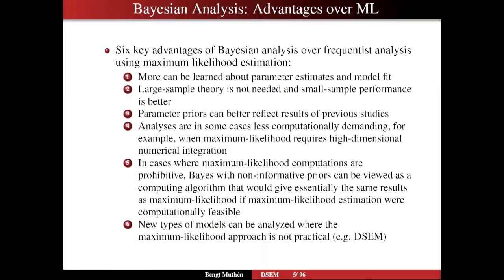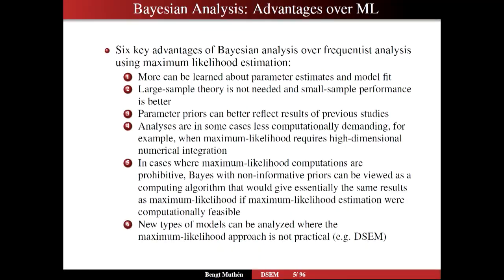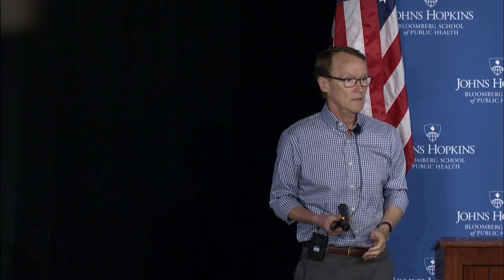ML is an example of so-called frequentist analysis, which is often a polar opposite of what Bayesian analysis is about. I would argue that Bayes can be used to learn much more about parameter estimates. In ML, you usually strive for getting a good parameter estimate — one parameter estimate and a standard error. In Bayes, you get the whole distribution of the parameter estimate — not only the mean and variance, but the whole distribution.